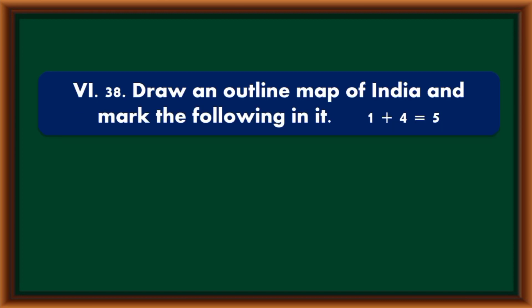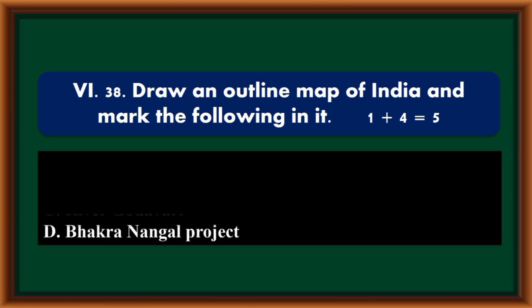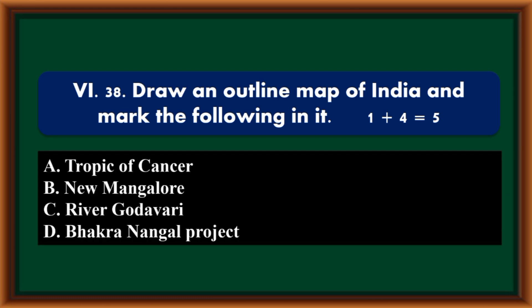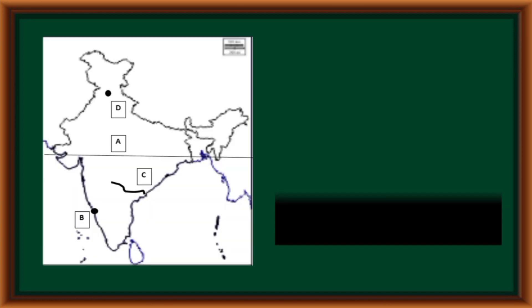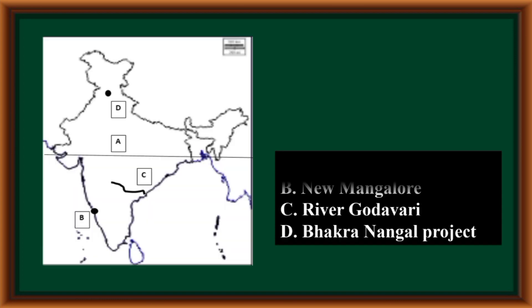Draw an outline map of India and mark the following: A — Tropic of Cancer; B — New Mangaluru; C — River Godavari; D — Bakra Nangal Project.